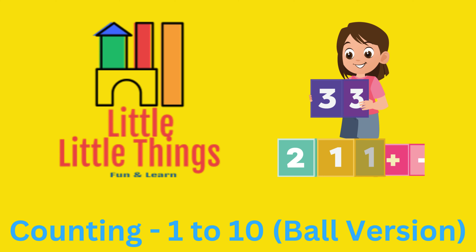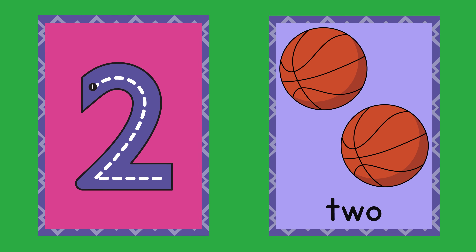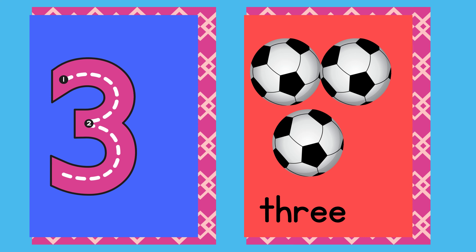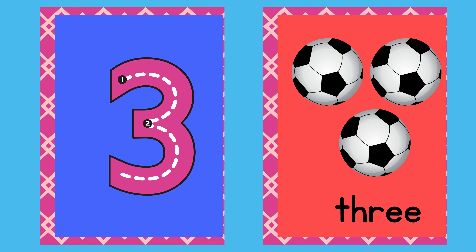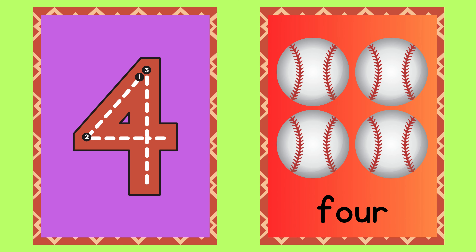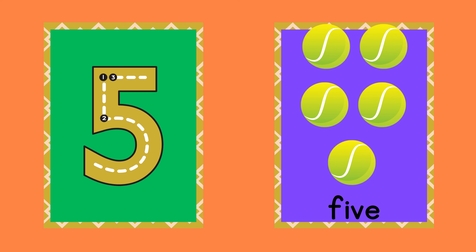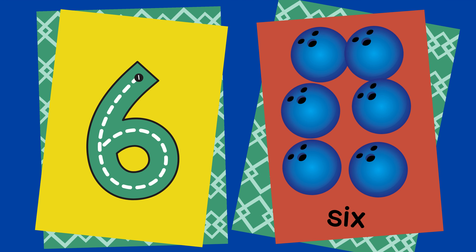Little Little Things Counting 1 to 10 Ball Version. 1 O N E, 2 T W O, 3 T H R E E, 4 F O U R, 5 F I V E.